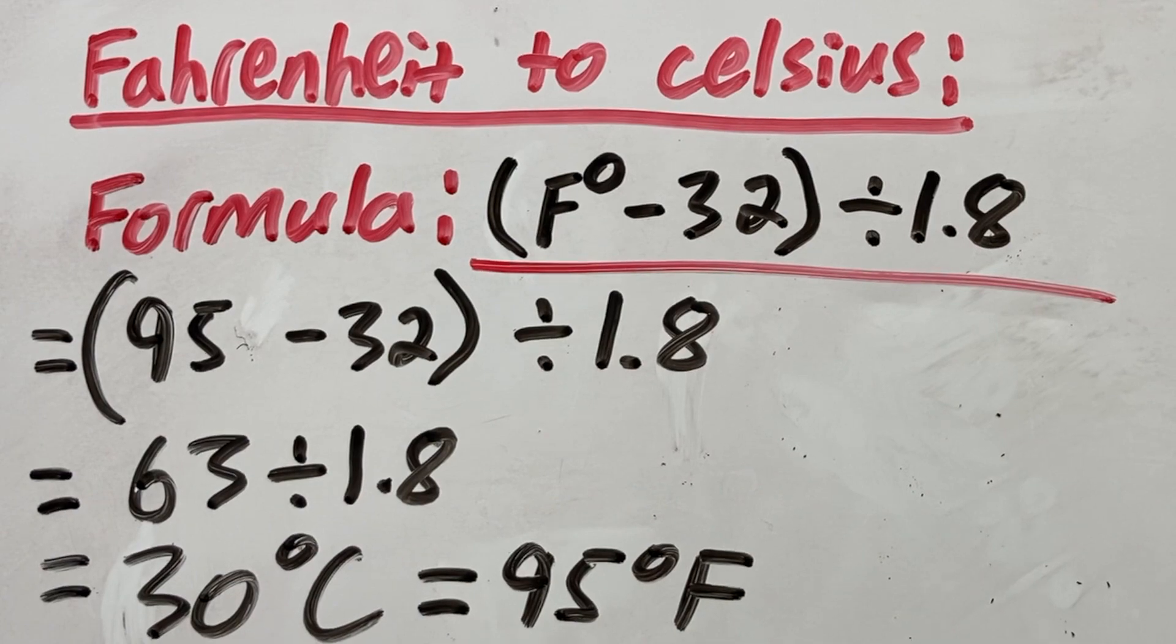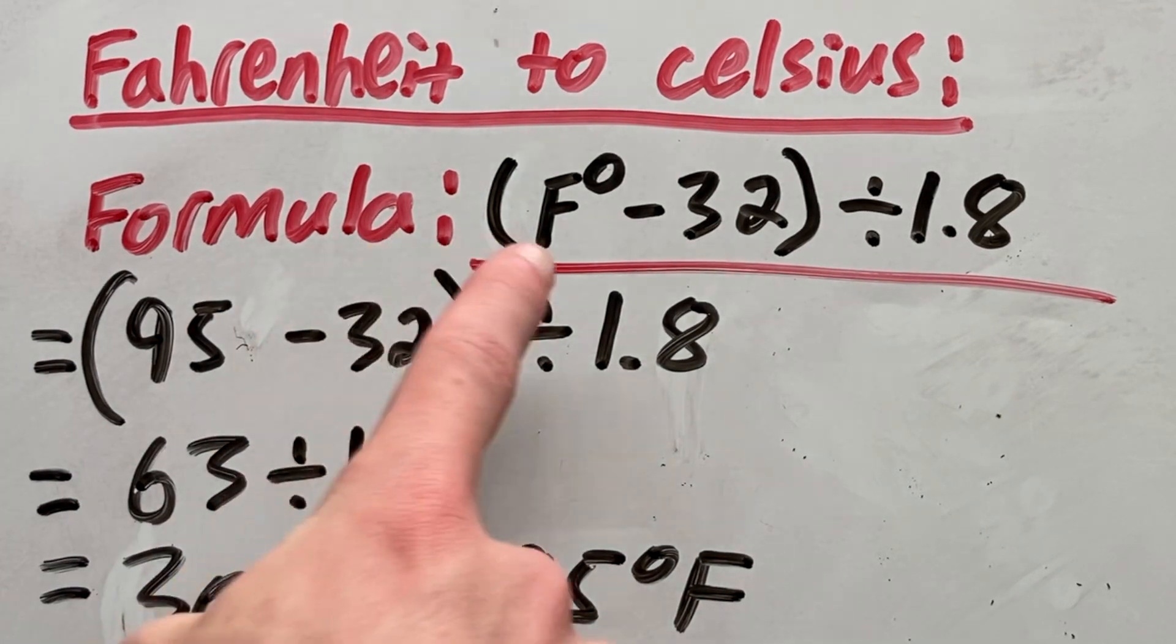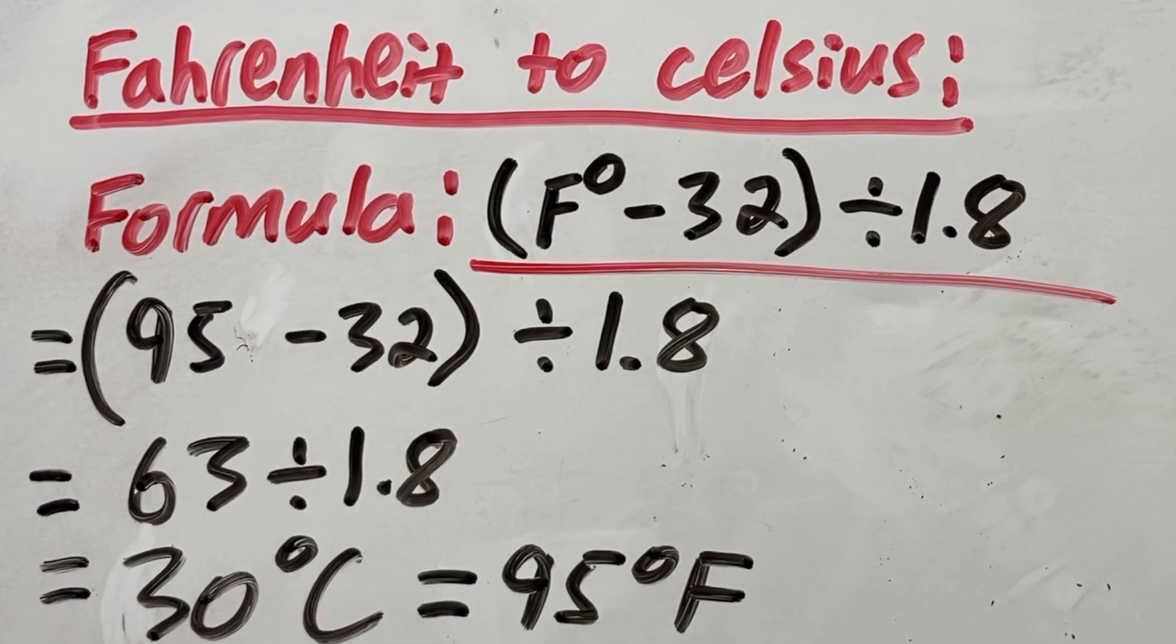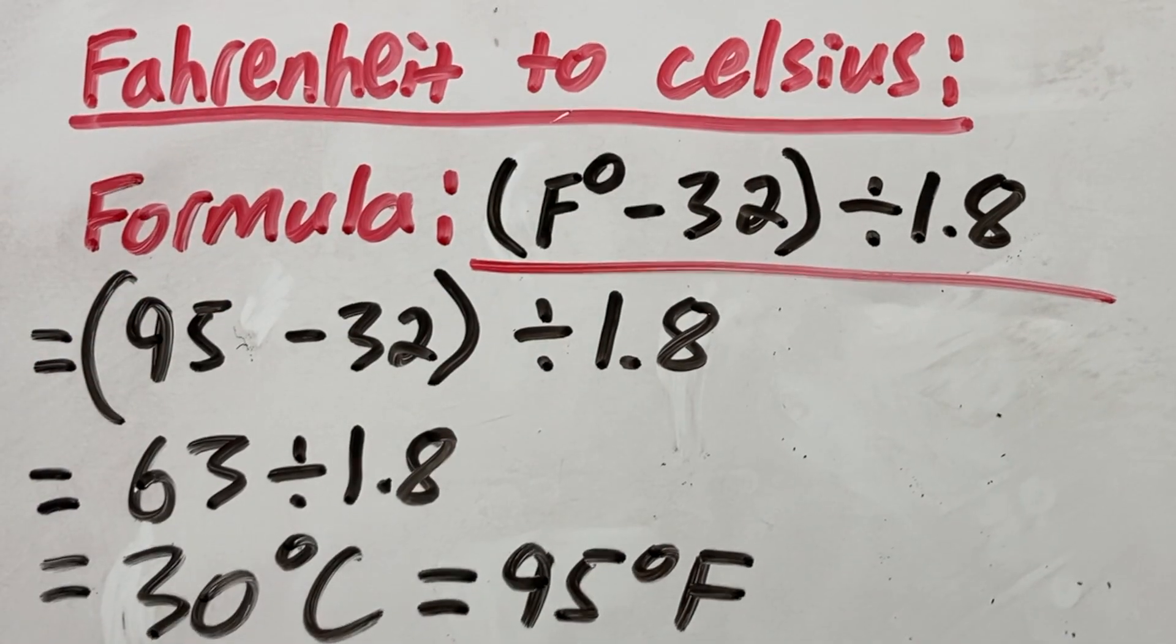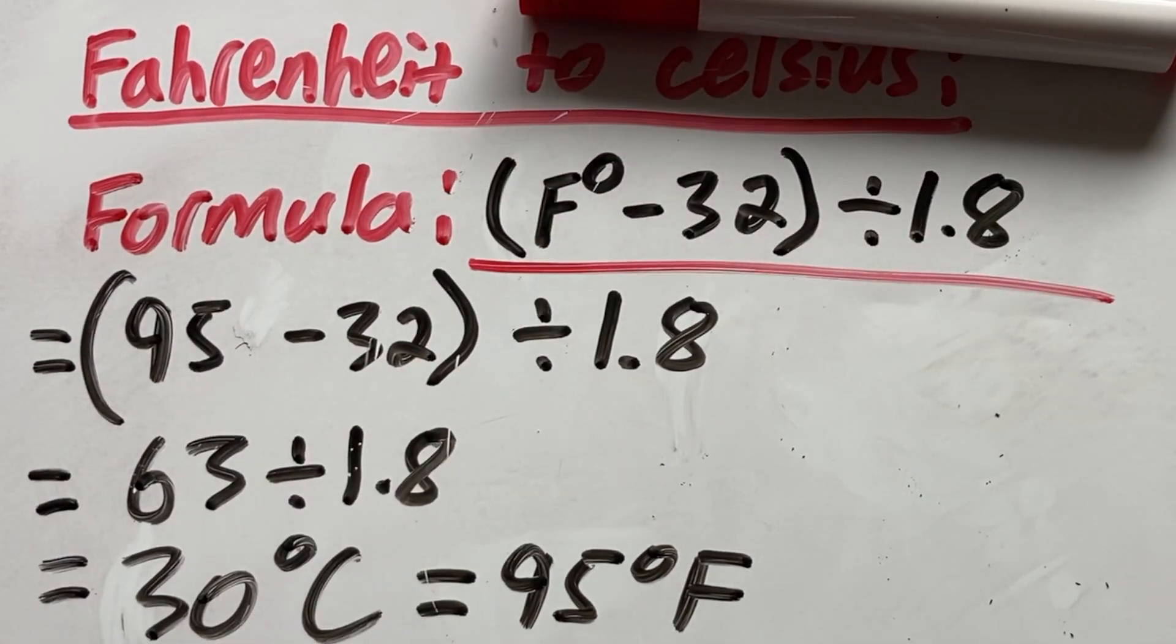So to recap, you simply plug your Fahrenheit value into this formula, and that will pop out your Celsius value. It's best to use a calculator. And that's how you convert Fahrenheit to Celsius.